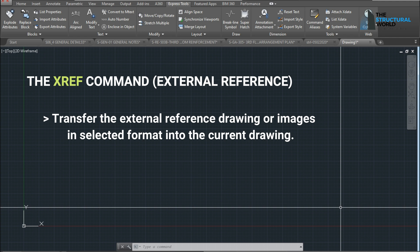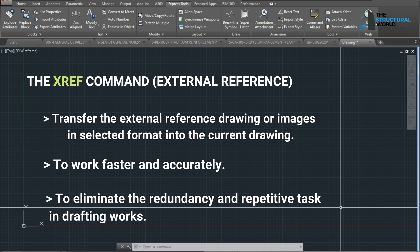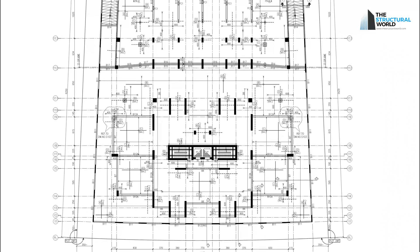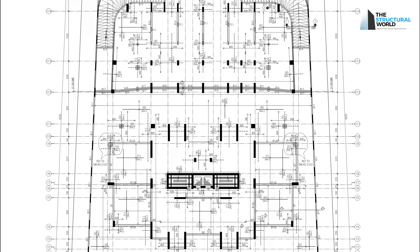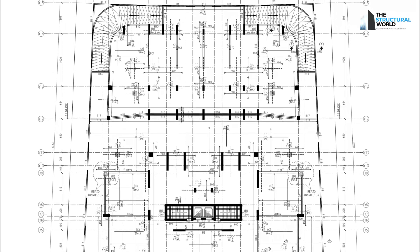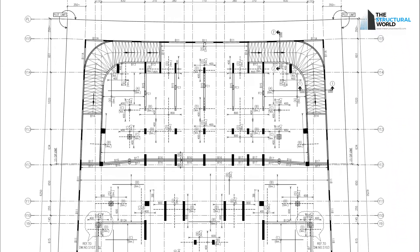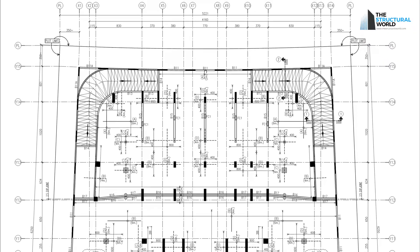This feature is very useful for architects and draftsmen to make the work faster and accurately. It can help eliminate redundancy and repetitive tasks and drafting works, since most of the working drawings and plans are made up of typical layouts and lines. This may include the grid lines or axis, columns and walls, partition walls, and others. The typical layouts can be attached or laid over on our current drawings without the use of copy-paste commands.